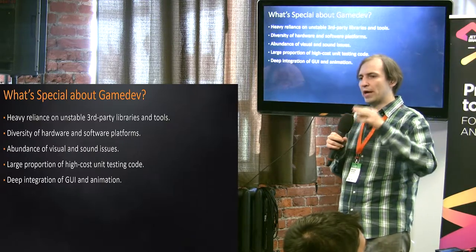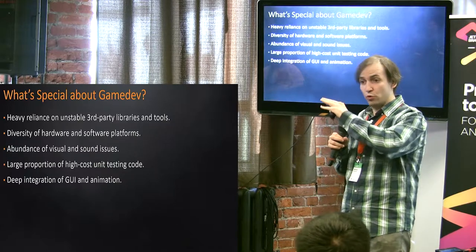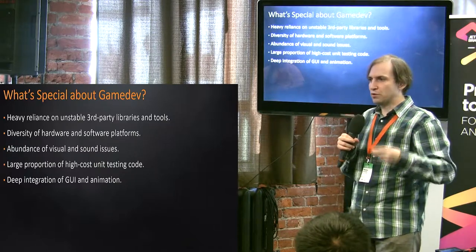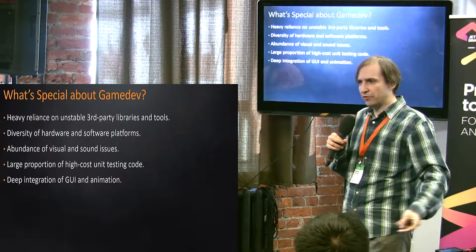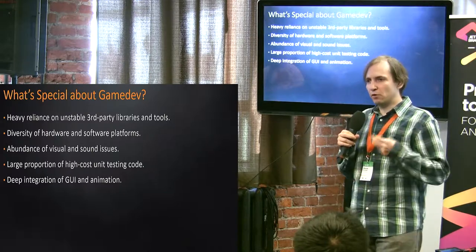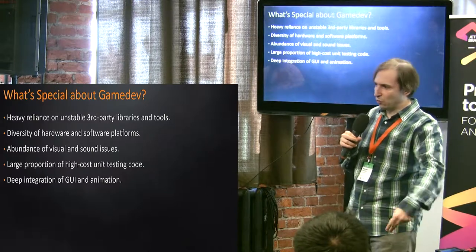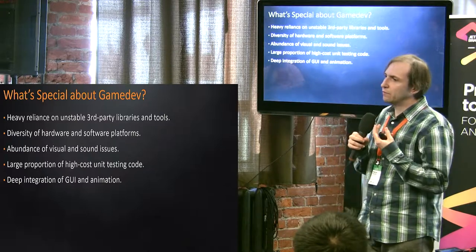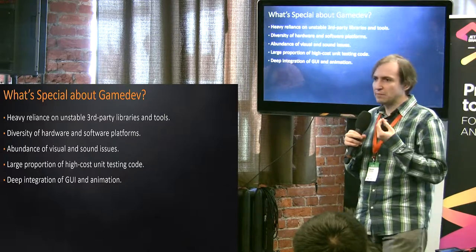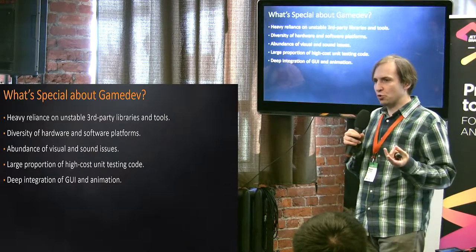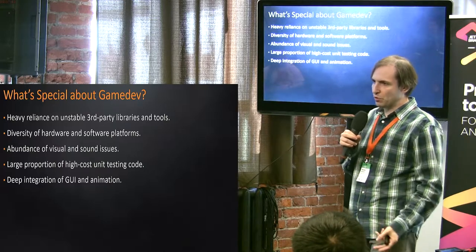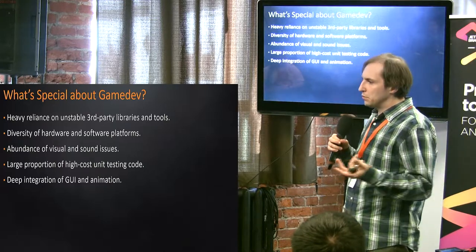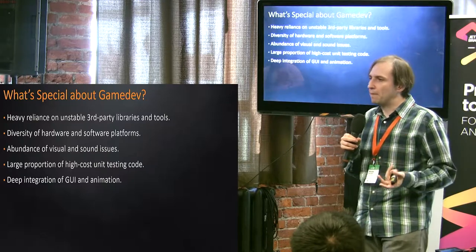For example, we had a situation where we were working with Unity when they just released cloth simulation. It's a tennis game — we have some female characters with nice skirts. But the only trouble is they look like clothes, they follow the wind. But sometimes it crashed. Now you face a choice: you either have skirts made of plastic, or you have to manage with the crashes and live with them.